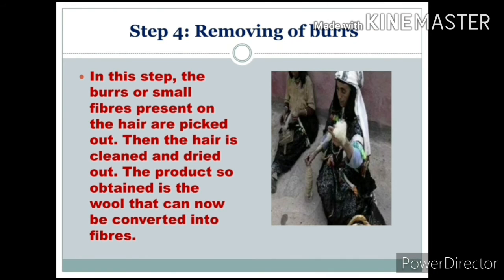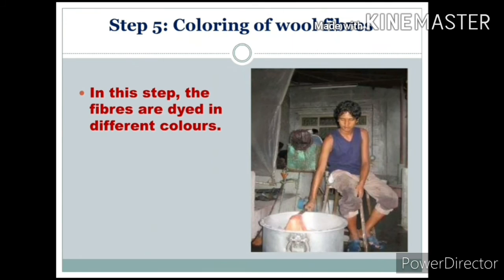The fourth step is removing of burrs. In this step, the burrs — small fibers present on the hair — are plucked out. Then the hair is cleaned and dried. The product so obtained is the wool that can now be converted into fibers.